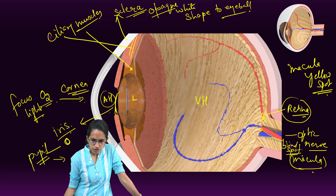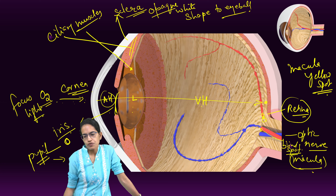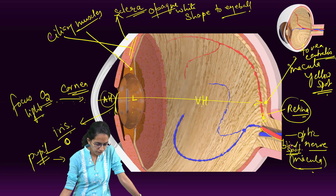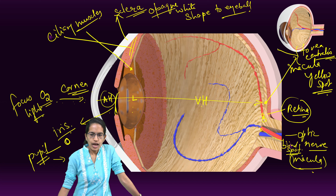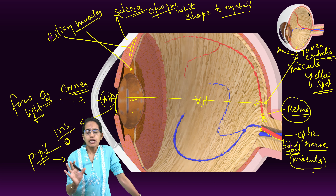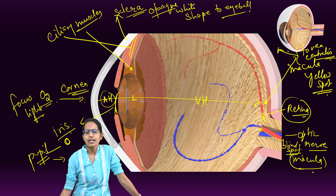Towards here is the optic nerve. Now this optic nerve sends the signal to the brain. Now at the tip where the optic nerve leaves, this is the point where no image is formed and this is actually called the blind spot. This region is the blind spot where the optic nerve leaves, and the blind spot is where you don't have any image formed. So it is devoid of any light-sensitive cells to form the image.